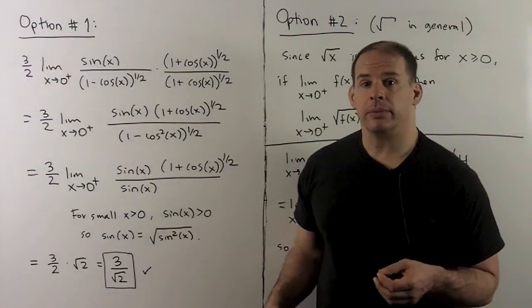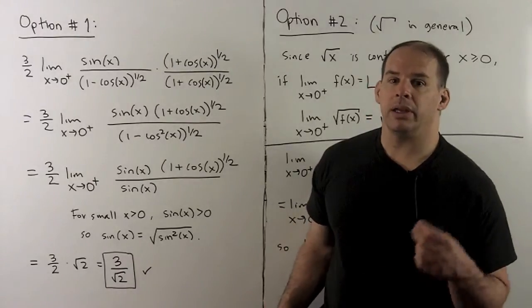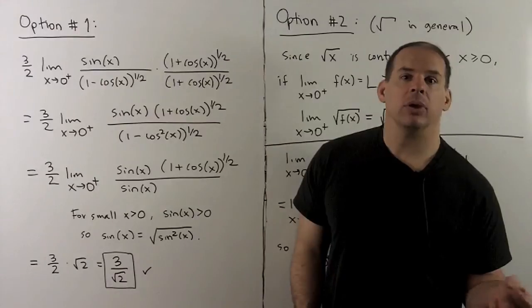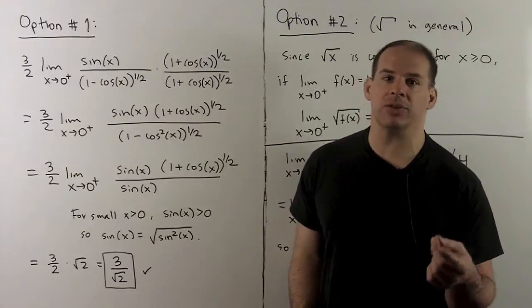We have options. To get around the square root, either we use a trig identity, or without that, we invoke general properties of limits with square roots.